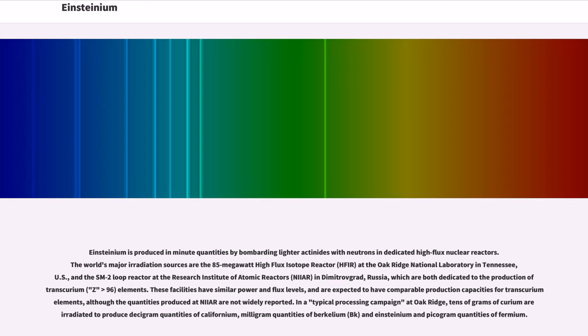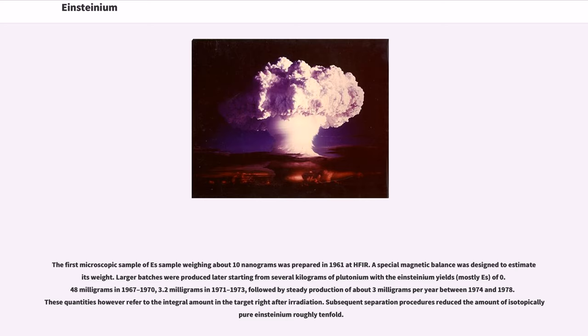Einsteinium is produced in minute quantities by bombarding lighter actinides with neutrons in dedicated high-flux nuclear reactors. The world's major irradiation sources are the 85-megawatt High Flux Isotope Reactor (HFIR) at the Oak Ridge National Laboratory in Tennessee, U.S., and the SM-2 loop reactor at the Research Institute of Atomic Reactors in Dimitrovgrad, Russia, which are both dedicated to the production of transcurium (Z greater than 96) elements. These facilities have similar power and flux levels, and are expected to have comparable production capacities for transcurium elements. In a typical processing campaign at Oak Ridge, tens of grams of curium are irradiated to produce decagram quantities of californium, milligram quantities of berkelium and Einsteinium and picogram quantities of fermium. The first microscopic sample of Es-253 weighing about 10 nanograms was prepared in 1961 at HFIR. A special magnetic balance was designed to estimate its weight.